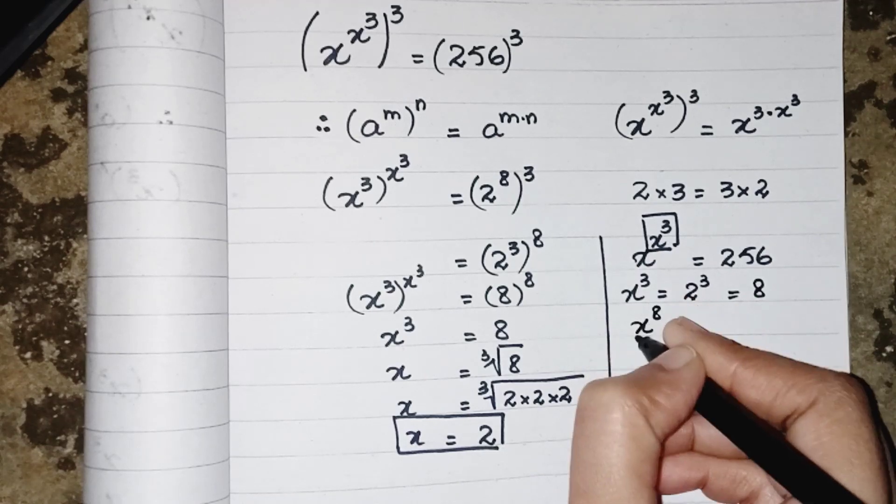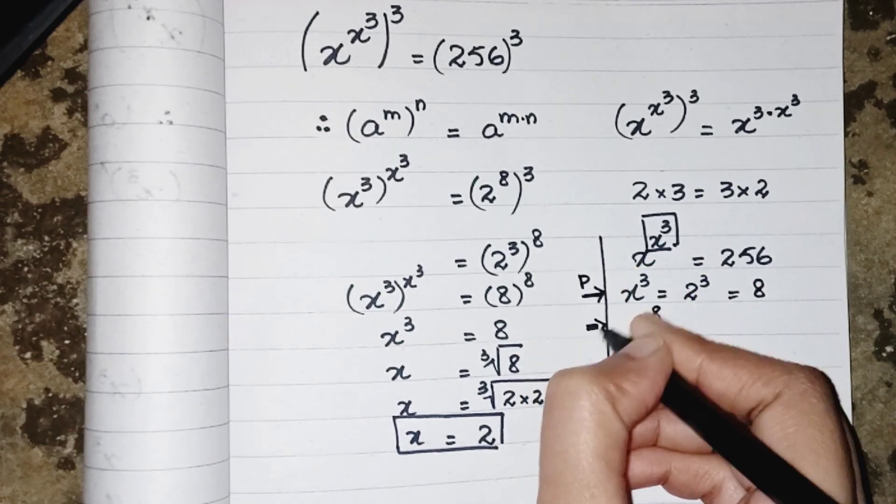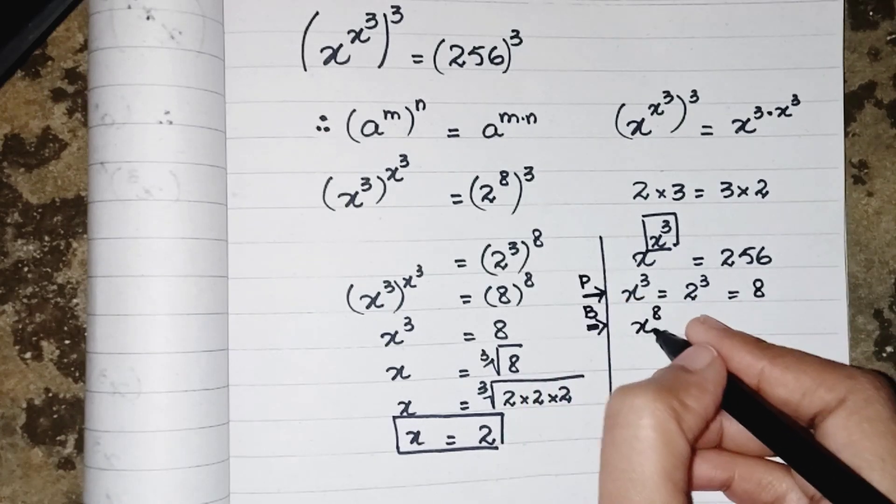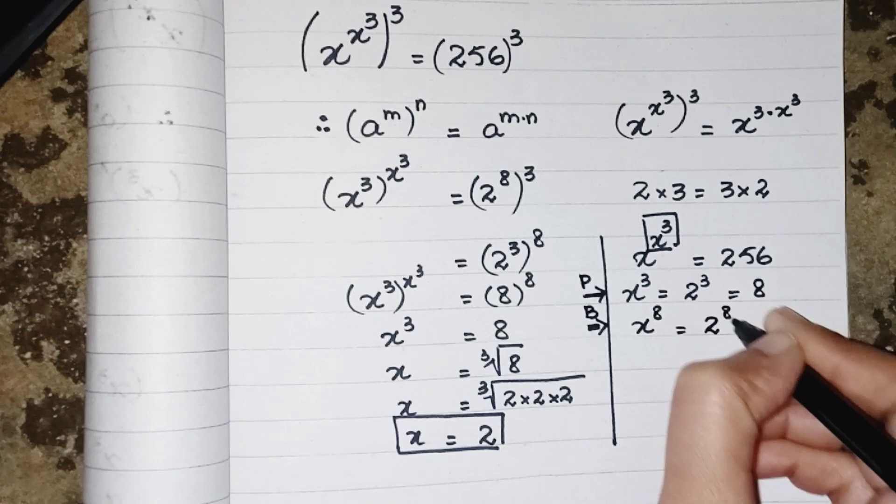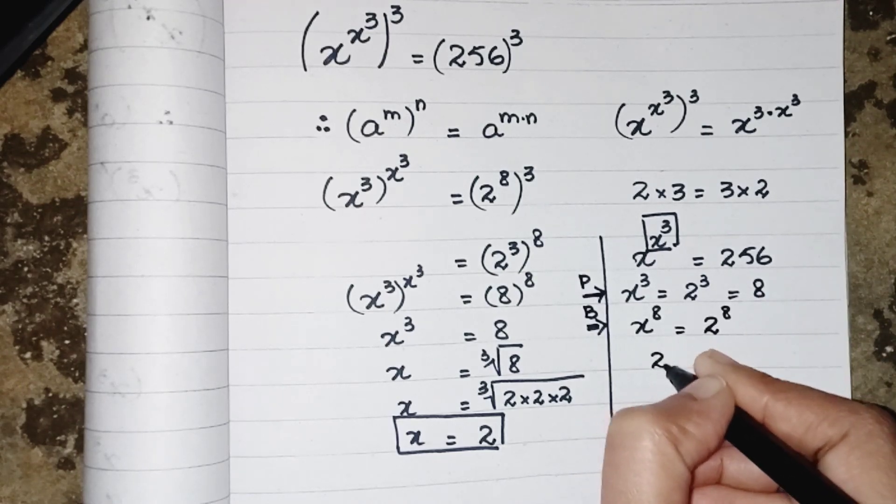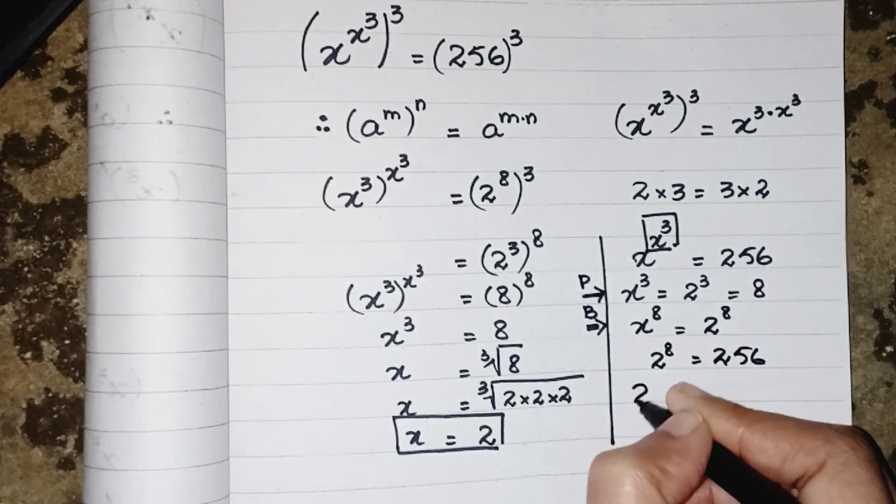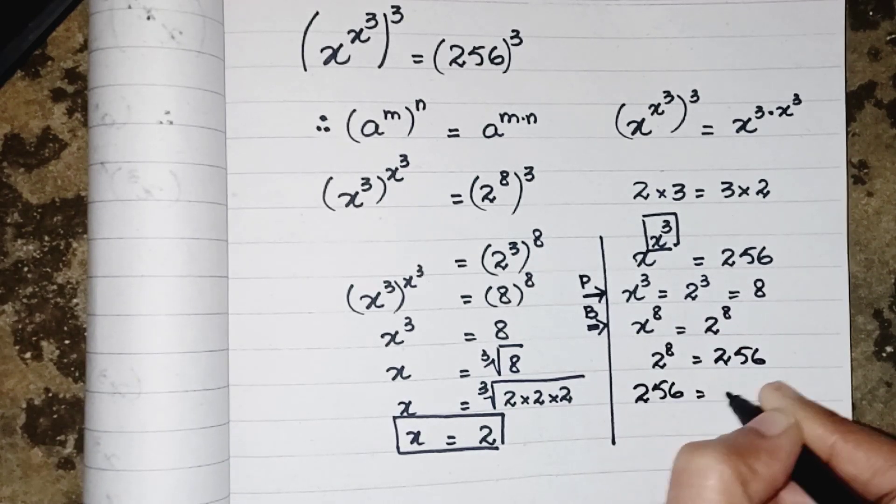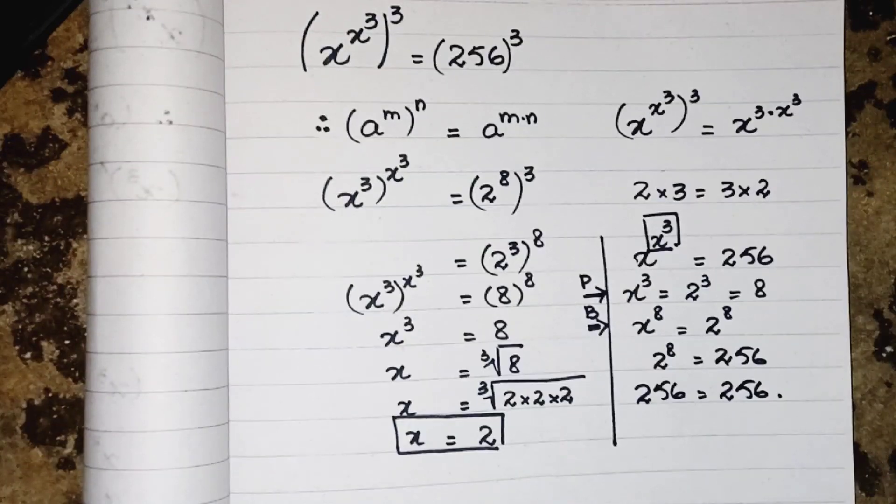So we can say that x power 8, this one is the power, this one is the base, x power 8 equals 2 power 8. So we can say that 2 power 8 equals 256, and 2 power 8 also equals 256. Hope you like the video, please share and subscribe, take care, bye!